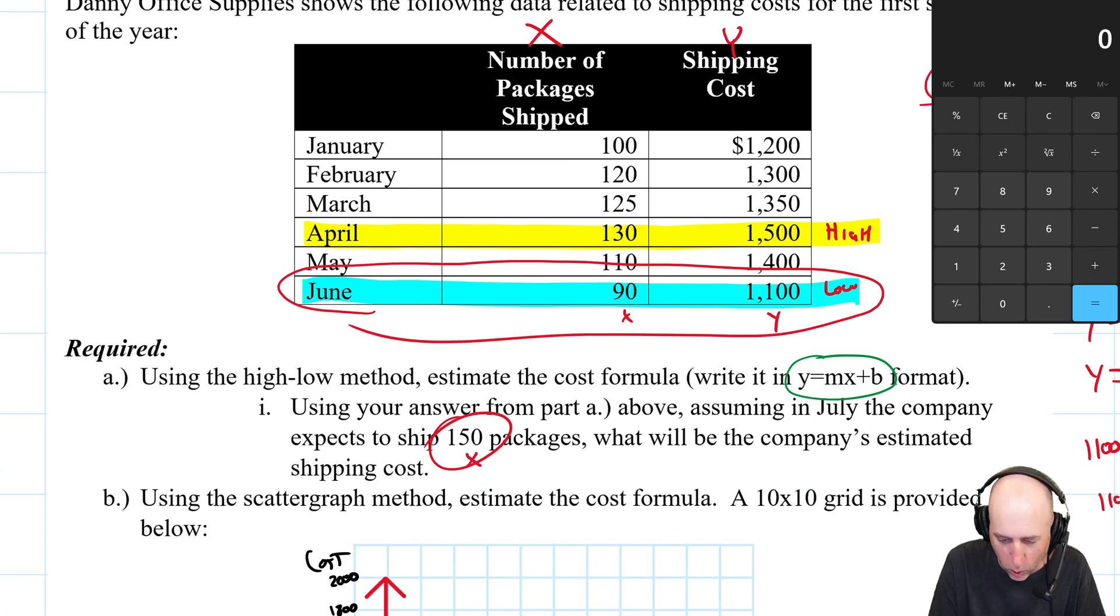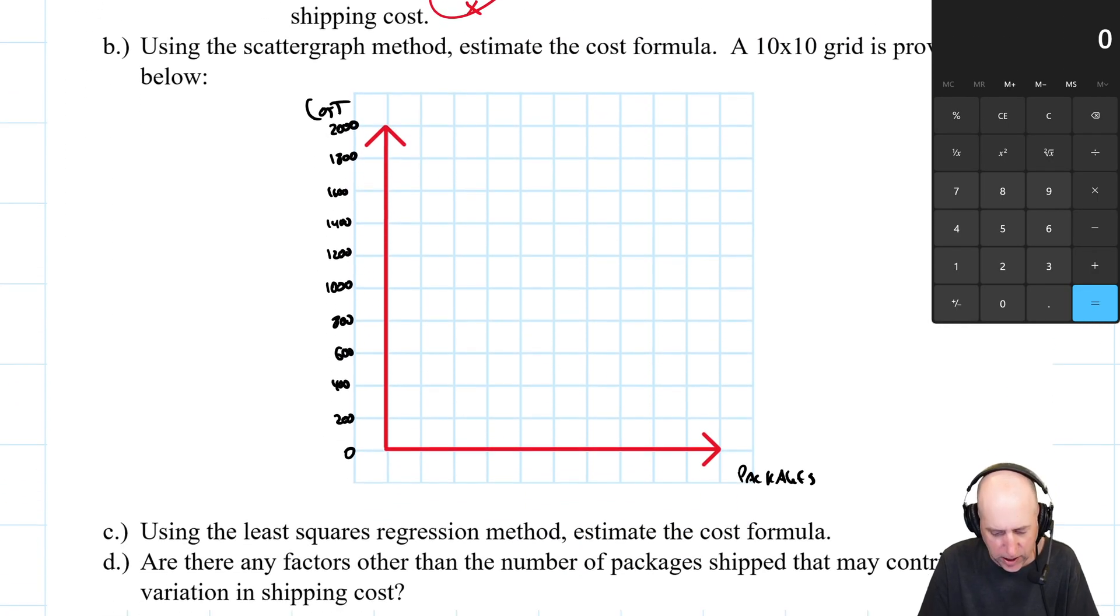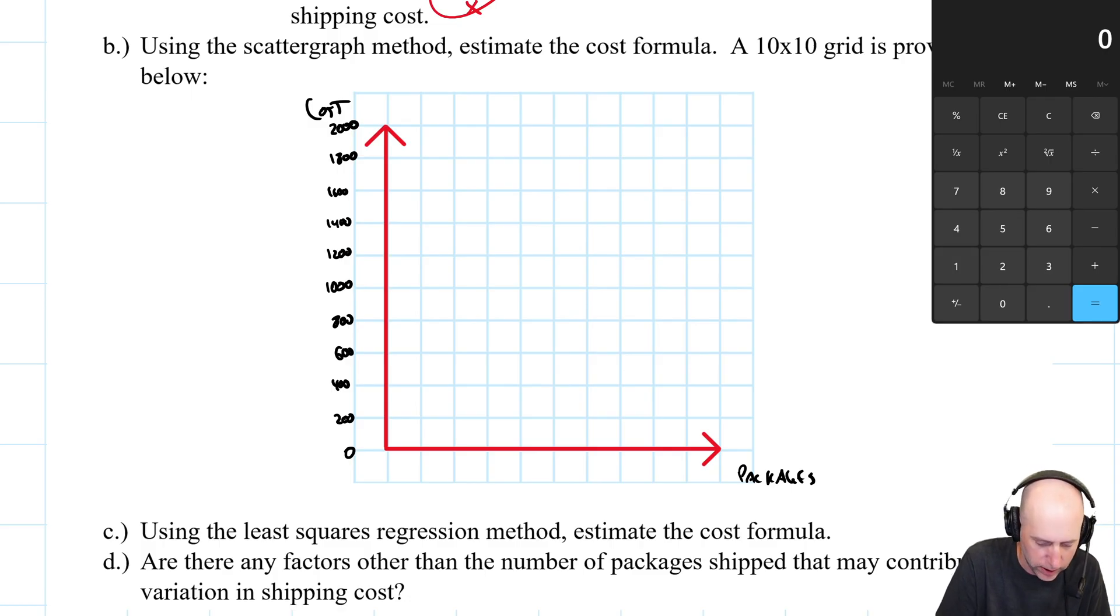So don't skip if you're asked to do a scatter graph and you have to label the axis. So for packages, 130 is our high point. I'm just gonna make it 200 again. I'm gonna make this one 200. So this is again zero, 20...